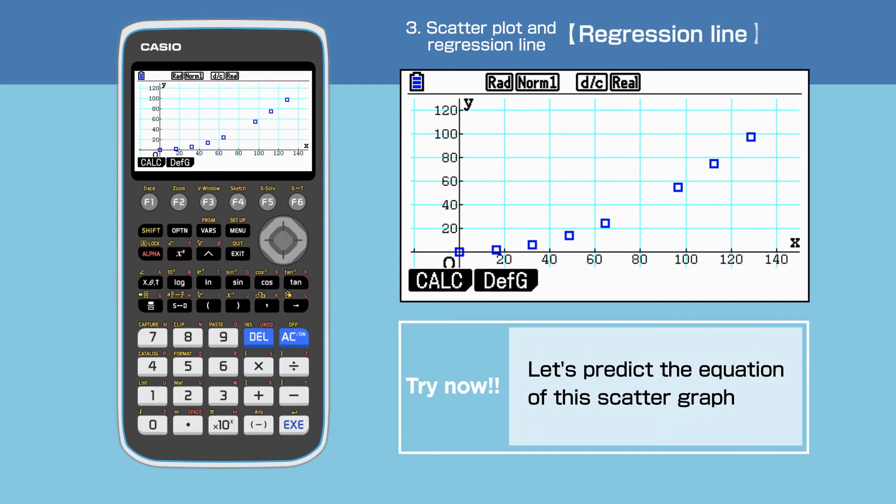Looking at the scatter plot, it shows a relatively strong linear correlation. So let's make an assumption of what the equation of the regression line might be.